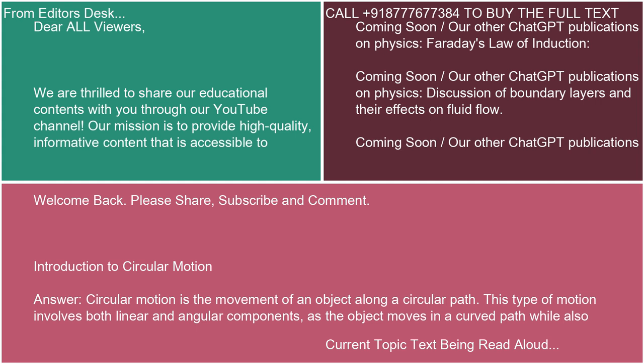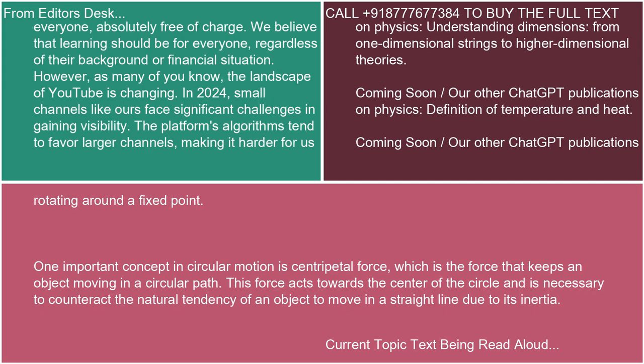Welcome back. Please share, subscribe, and comment. Introduction to Circular Motion: Circular motion is the movement of an object along a circular path. This type of motion involves both linear and angular components, as the object moves in a curved path while also rotating around a fixed point.